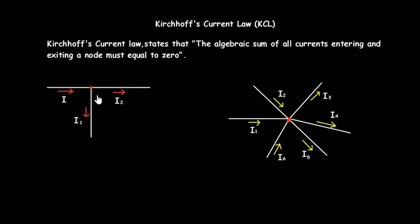When you sum all these currents, it must be equal to zero. When the current is moving towards the node, we consider it to be positive, and when the current is moving away from the node, we consider it to be negative. Applying Kirchhoff's current law, the sum of the current entering and exiting a node must be equal to zero.